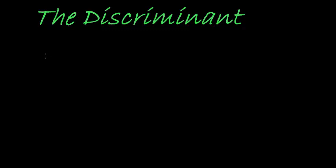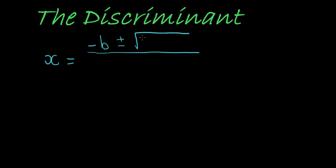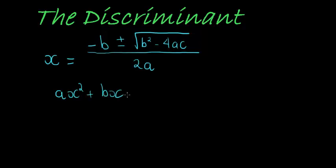I just quickly want to get back to the formula for just one moment so that I can show you something. Our formula, the quadratic formula, is minus b plus-minus the square root of b squared minus 4ac over 2a. Now, this is when we have a quadratic equation ax squared plus bx plus c is equal to 0. A quadratic equation can have different types of solutions — for example, two solutions.